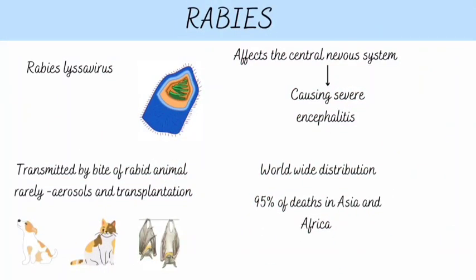People usually get rabies from the bite of a rabid animal. It is also possible, but rare, for people to get rabies from non-bite exposures, which can include scratches, abrasions, or open wounds that are exposed to saliva or other potentially infectious material from a rabid animal.